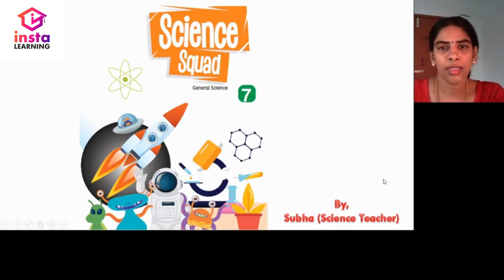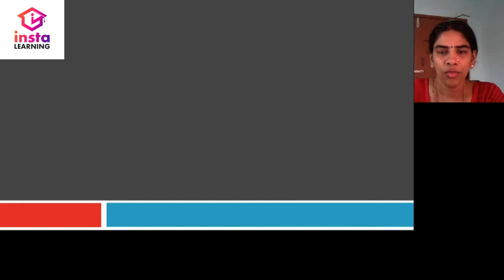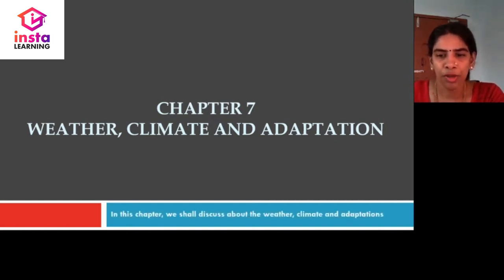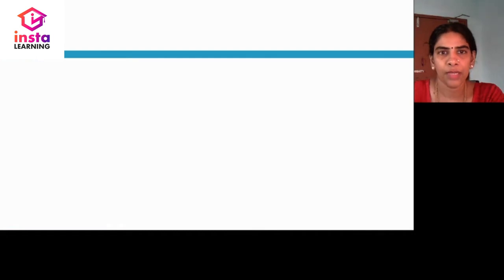Hello students, let us learn General Science for class 7 from the book Science Squared. Today we are going to learn chapter 7: Weather, Climate and Adaptation. In this chapter, we are going to discuss about how weather and climate are formed and how plants and animals are adapted to the particular weather and climate. Let us begin the chapter.